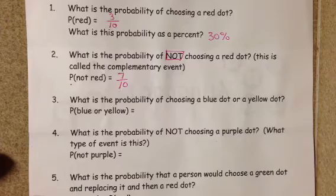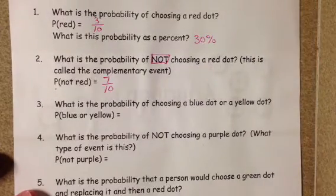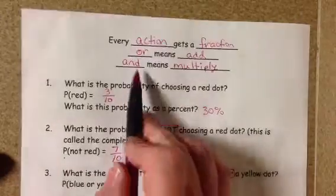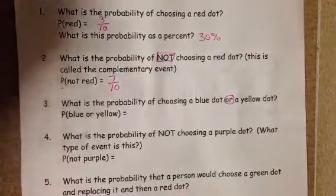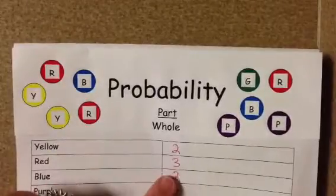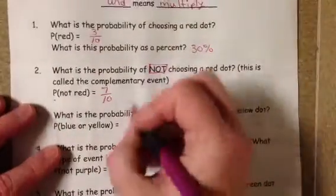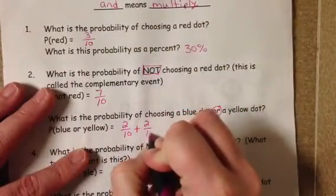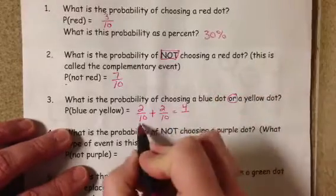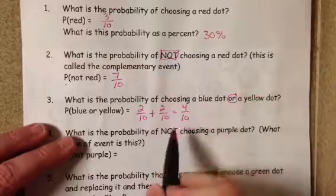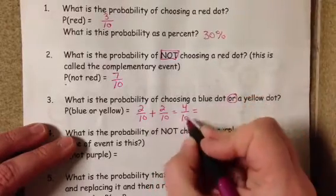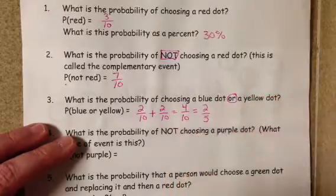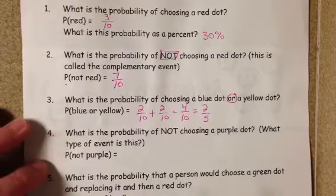We want to know: what is the probability of choosing a blue dot or a yellow dot? Here's our keyword: 'or.' And 'or' means we need to add. The probability of choosing a blue dot — we have two blue dots out of ten, so that's two out of ten. Because it says 'or,' I'm going to add the yellow: two out of ten. Two plus two is four, and the tens stay the tens, giving four-tenths. We simplify by dividing by two, which gives us two-fifths.